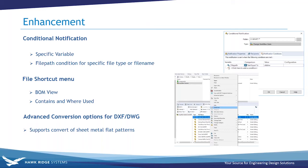Now if you right-click on a file in those views, you have options like check out and check in right from that window. The advanced conversion option for DXF/DWG applies to sheet metal flat patterns, giving you additional conversion options.